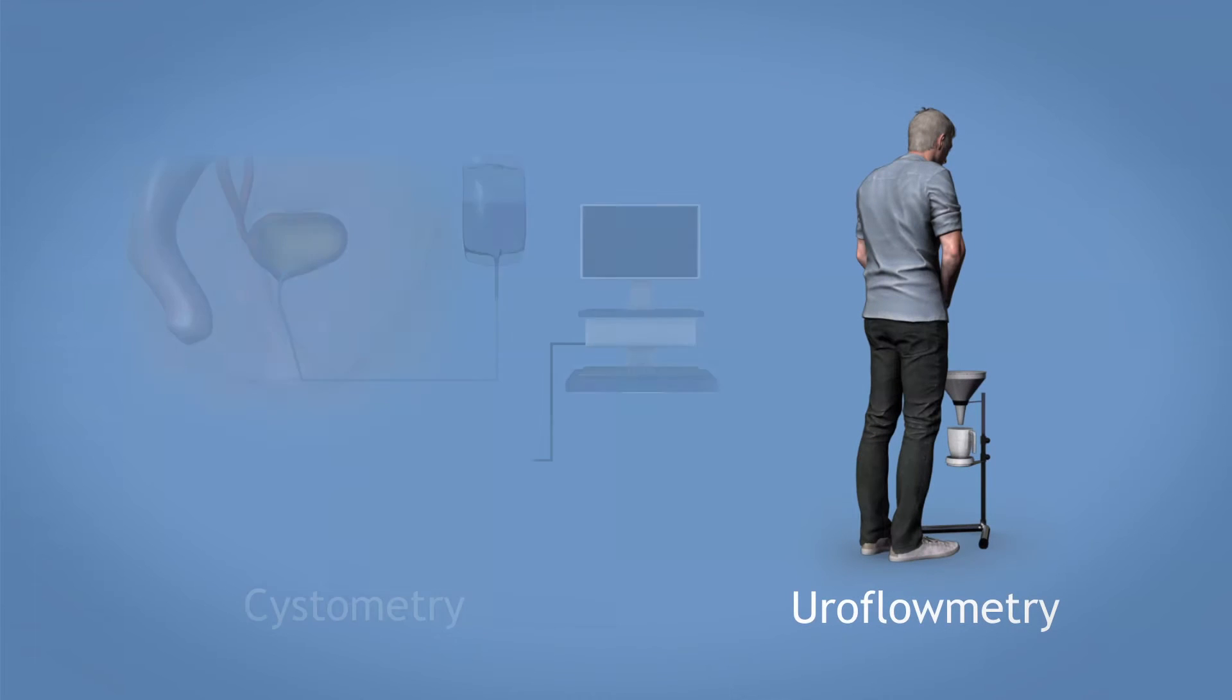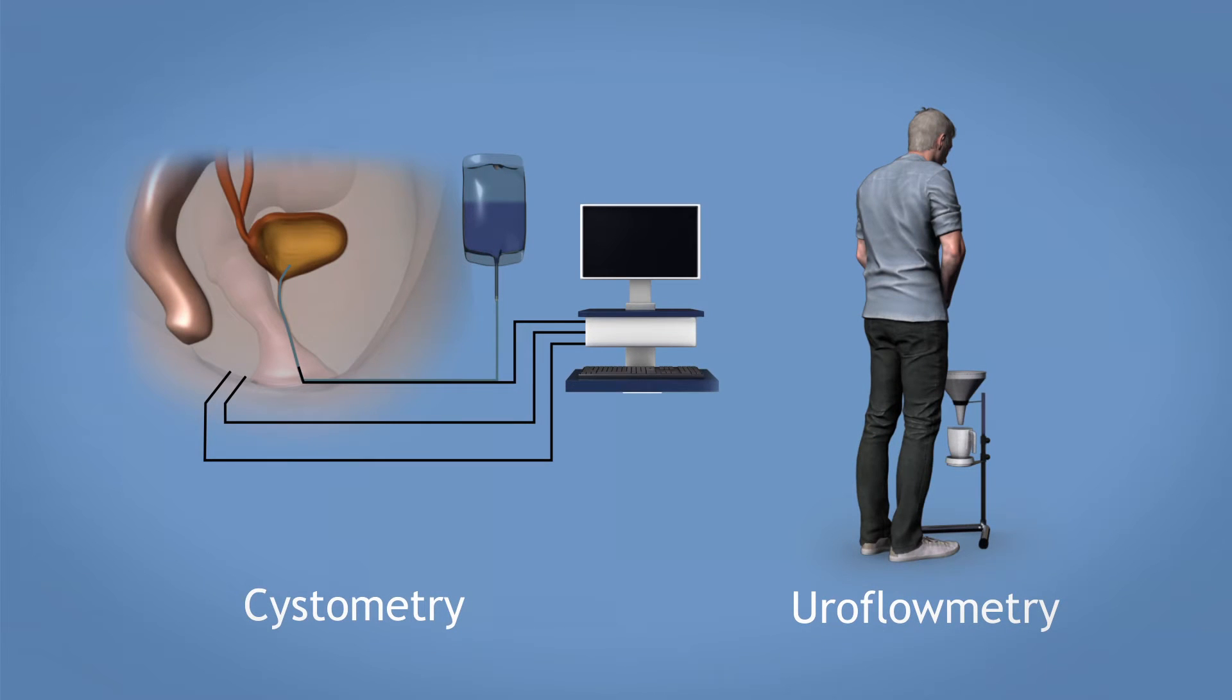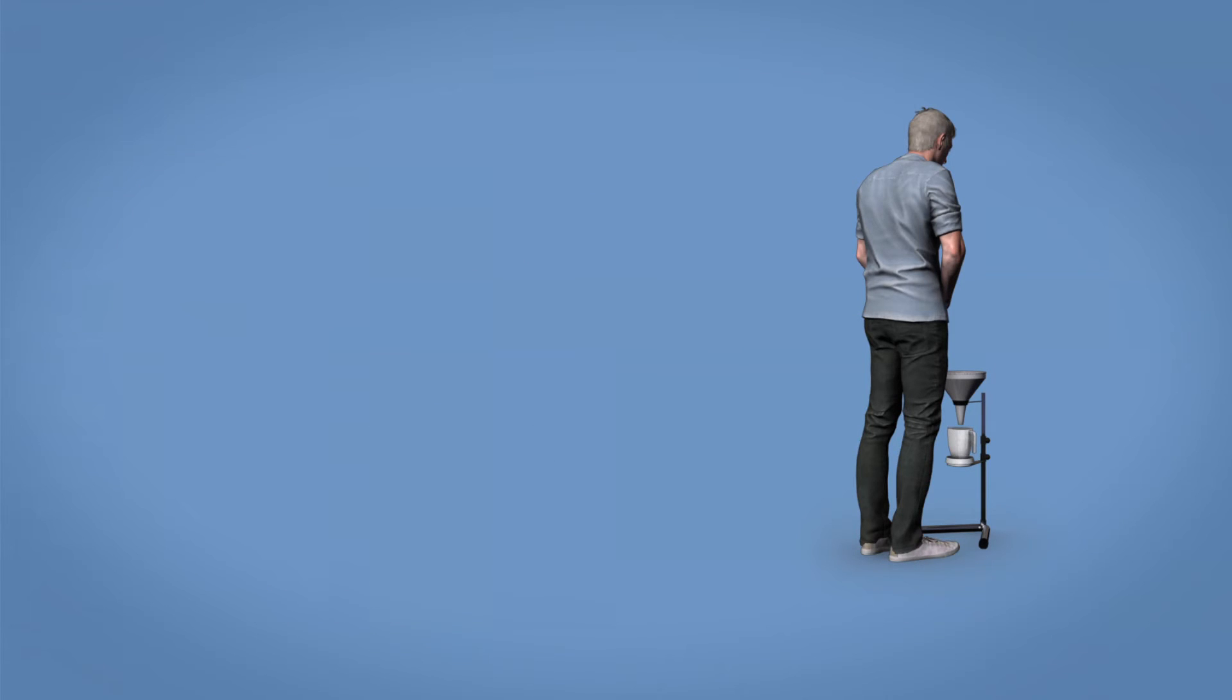Some of the tests include uroflowmetry and cystometry. Uroflowmetry is used to measure the rate of urine flow during urination. Cystometry is used to check whether the bladder is emptying and filling properly. This animation shows how a typical urodynamic study is performed.